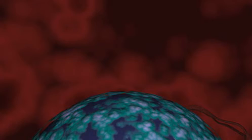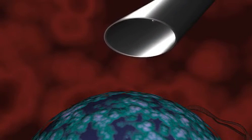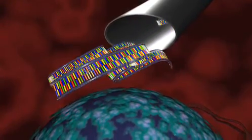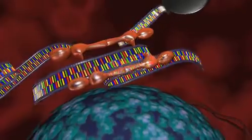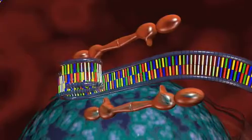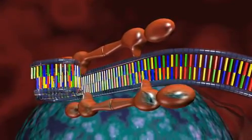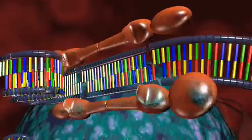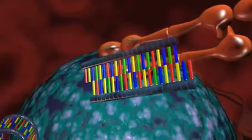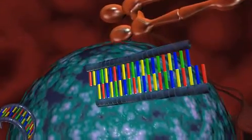When long double-stranded RNAs enter a cell, they are recognized and cleaved by DICER, which is a member of the RNase III family of double-stranded RNA-specific endonucleases. Cleavage by DICER creates short double-stranded RNAs that are characterized by two nucleotide-long three-prime overhangs. These are called small interfering, or siRNAs.